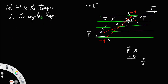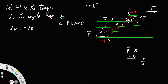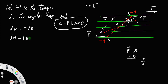If a torque displaces a dipole through an angle theta, then definitely work is done. The small work done dW to rotate through angle dθ will be torque times dθ. We already discussed this relation in our previous video. Also, the torque acting on a dipole is τ = pE sinθ — we also derived this in the previous video. So substituting, the small work done dW = pE sinθ dθ. Let us call this equation number one.